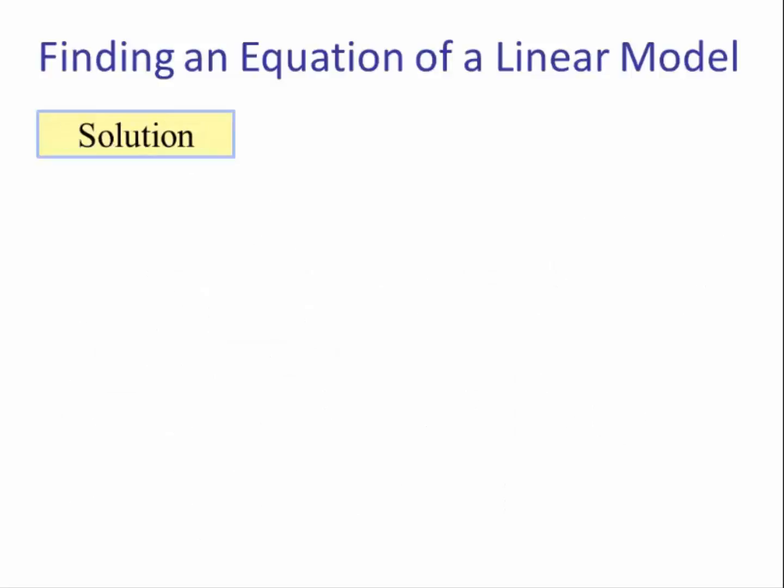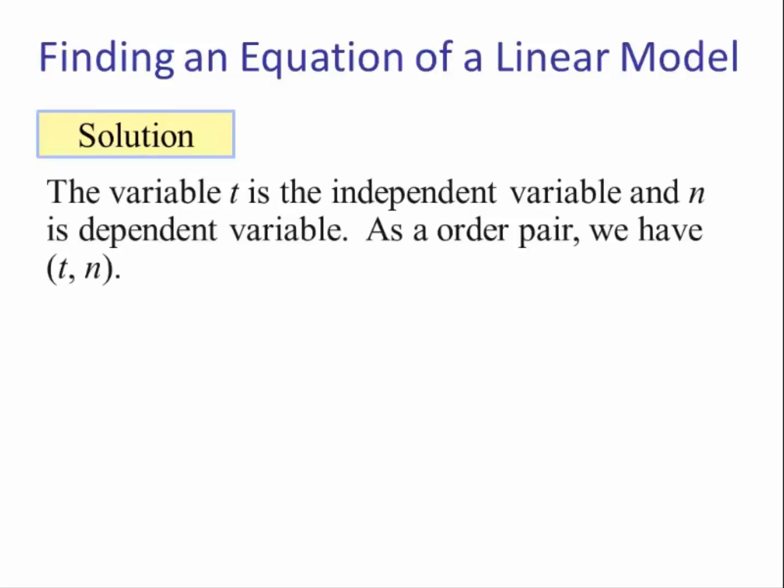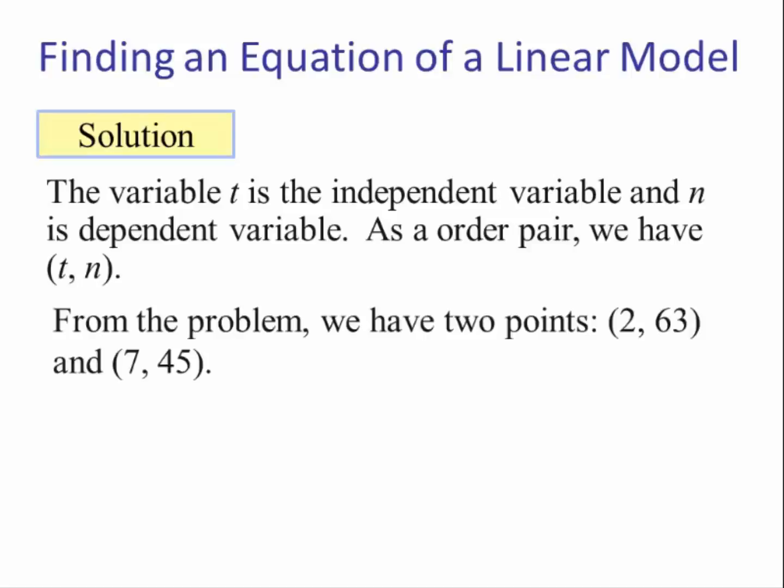Solution: the variable T is the independent variable and N is the dependent variable. As an ordered pair we have (T, N). From the problem we have two points: (2, 63) and (7, 45).